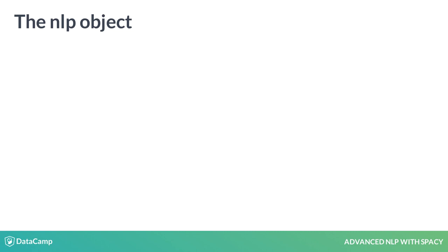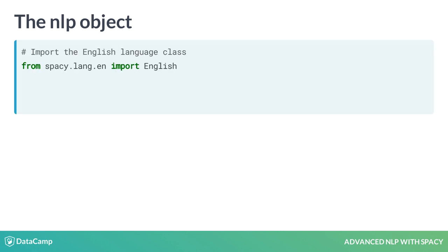At the center of spaCy is the object containing the processing pipeline. We usually call this variable NLP. To create an English NLP object, you can import the English language class from spaCy.lang.en and instantiate it. You can use the NLP object like a function to analyze text.